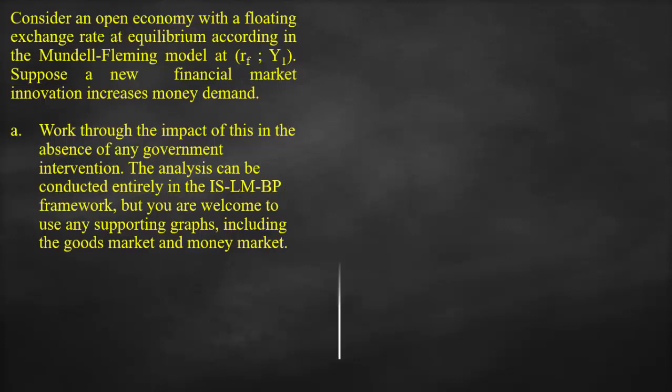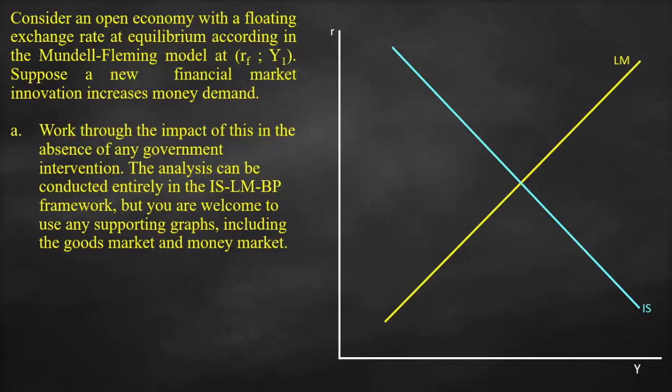So we'll start by drawing our Y-axis, which is the real interest rate, our X-axis, which is our real output. And this is our downward sloping IS curve. And this is our upward sloping LM curve. And then horizontally, we have our balance of payment curve. And here we reach equilibrium at Y1, because the three curves intersect at the same point, which will give us R1, which we can call it as RF, as mentioned in the question. And this will give us Y1 as well.